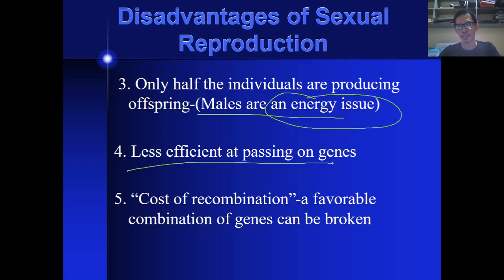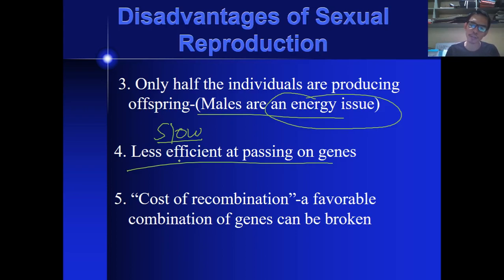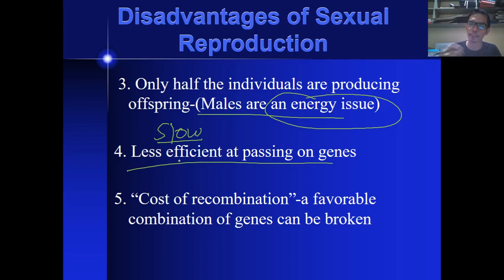Number four: less efficient in passing genes. Why? Because the passing of genes is very slow, and therefore the efficiency is very slow as well. Even though it is slow, evolution happens faster because of genetic recombination. Also, another reason it is less efficient is because some organisms produce only one or two offspring in the long run, which is very inefficient. The offspring are limited to a certain number of genes you can pass on, and it depends on the number of offspring you will produce.